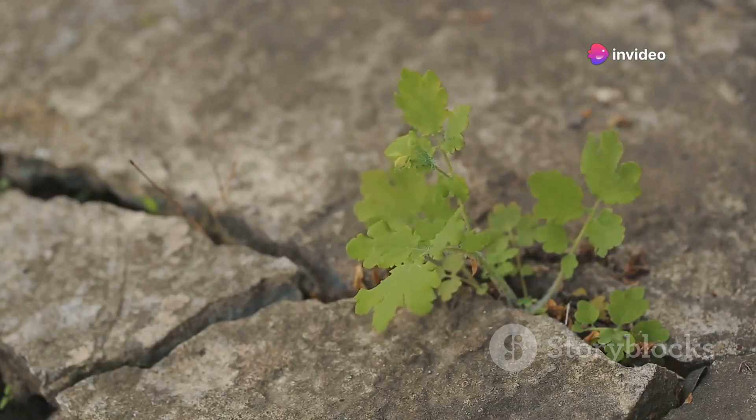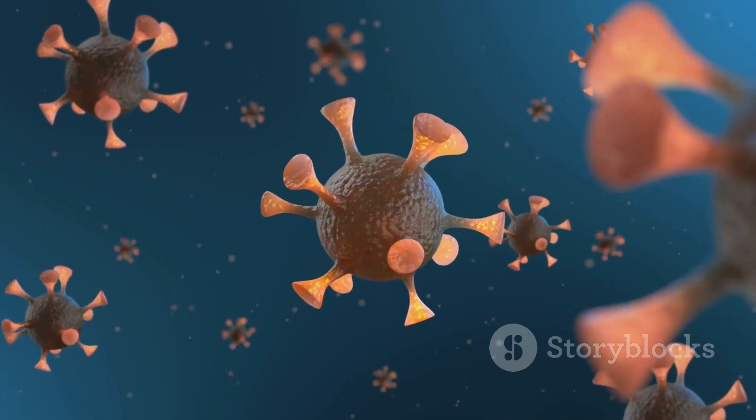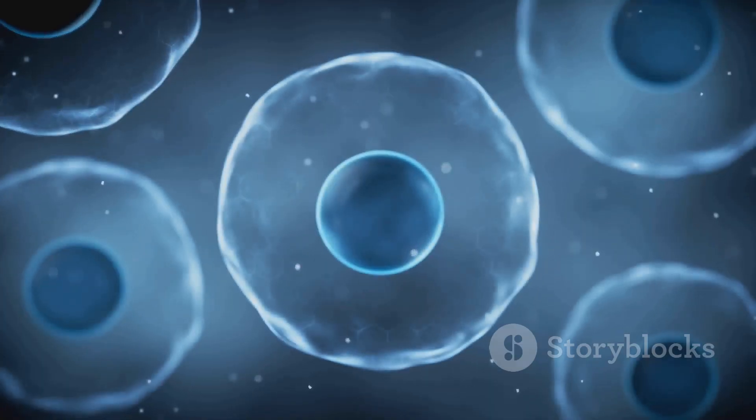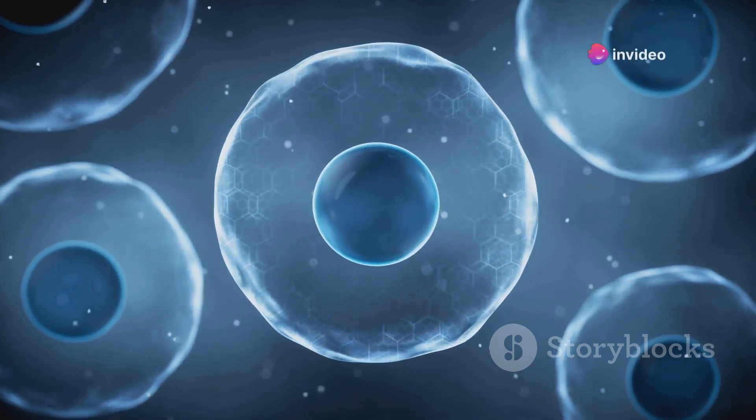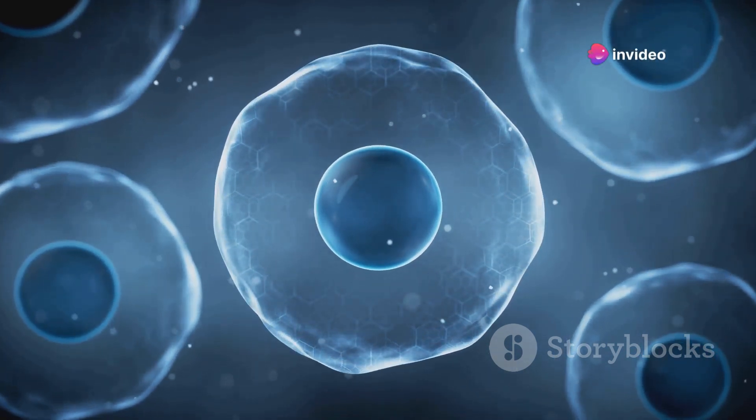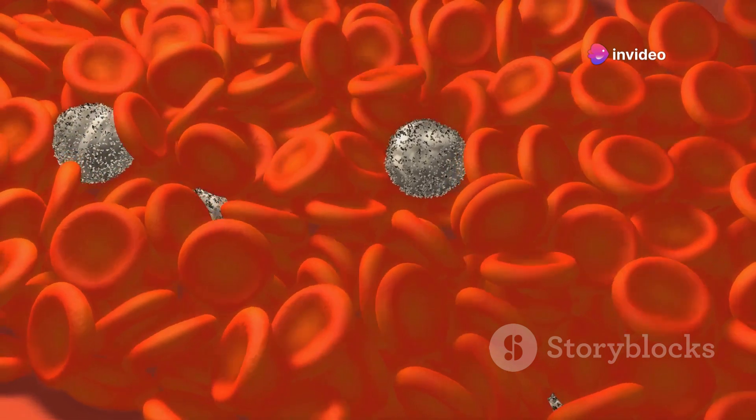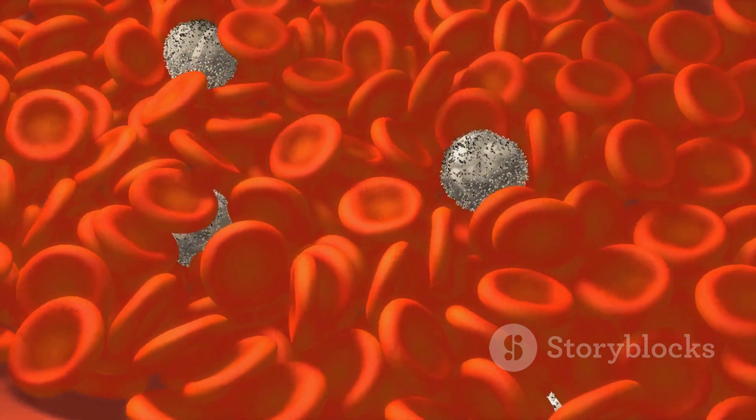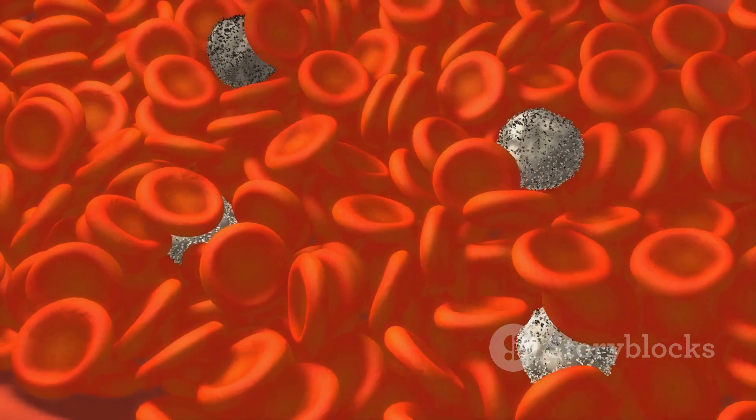However, even in the face of such challenges, life finds a way. Cells have evolved remarkable mechanisms for coping with stress and repairing damage. When ATP levels drop, cells can activate pathways that conserve energy and promote survival. And when cells are injured, they can release signals that recruit immune cells to the site of damage, helping to repair the injury and prevent further harm.